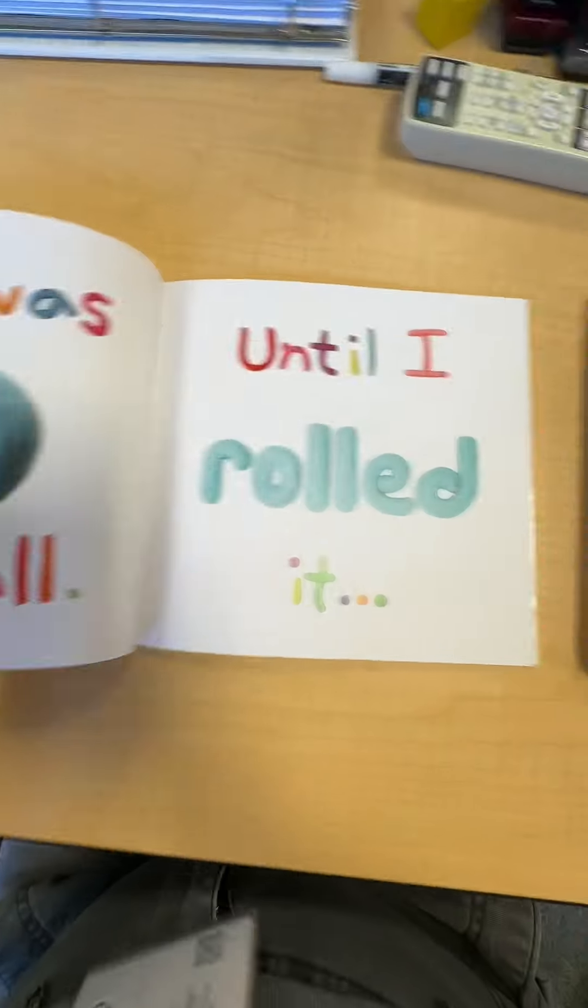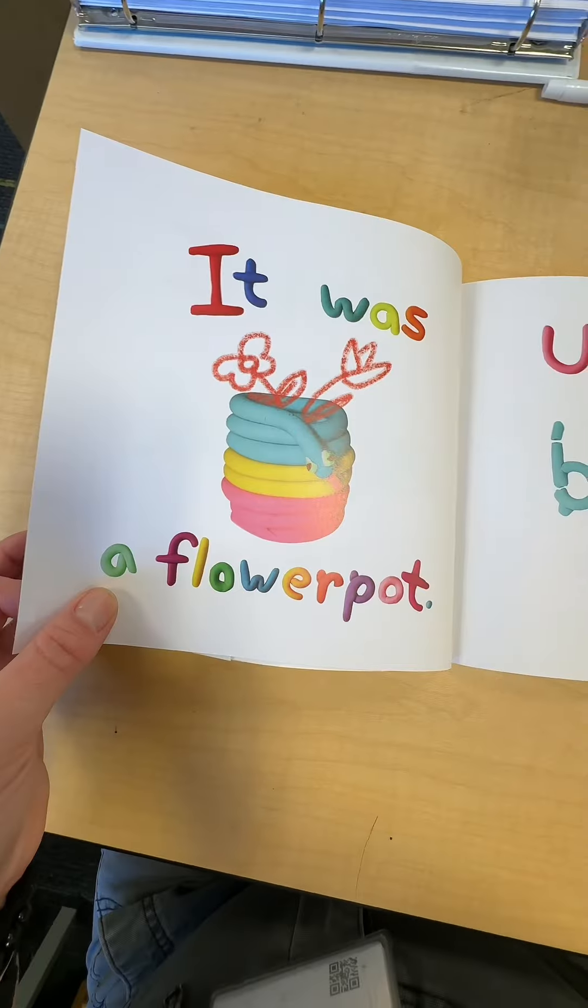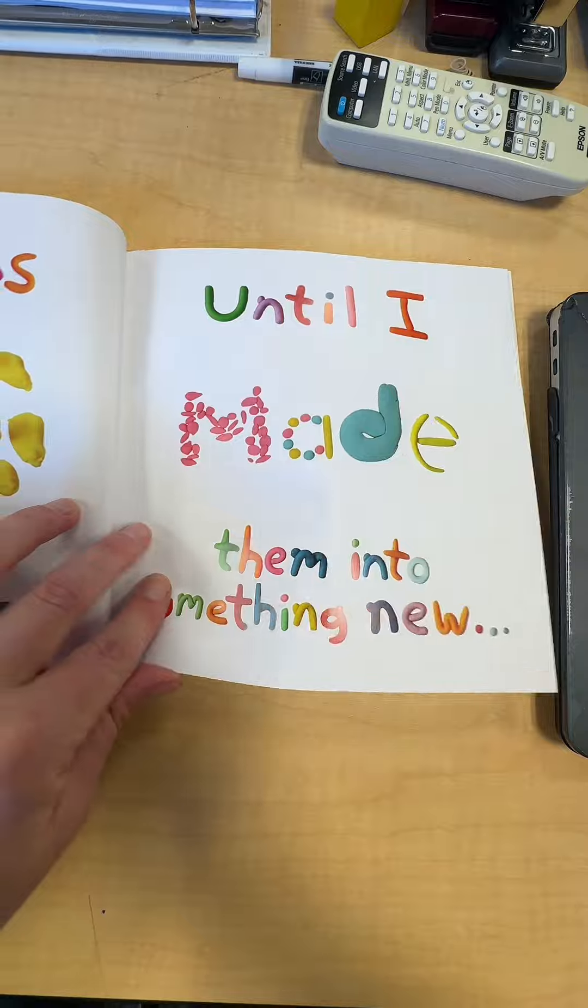It was a blob until I formed it. It was a ball until I rolled it. It was a snake until I coiled it. It was a flower pot until I broke it. It was lots of little pieces until I made them into something new.